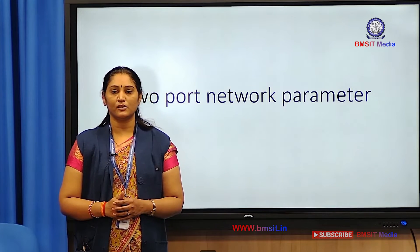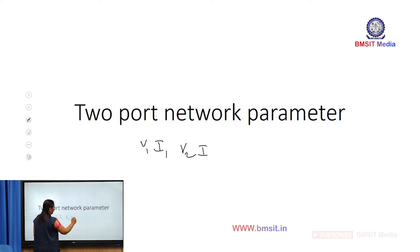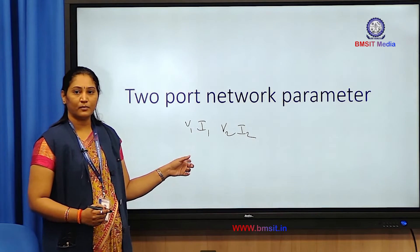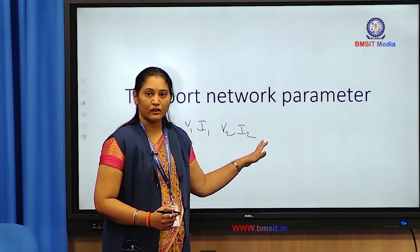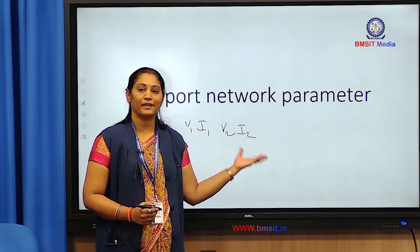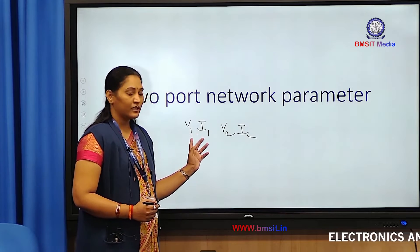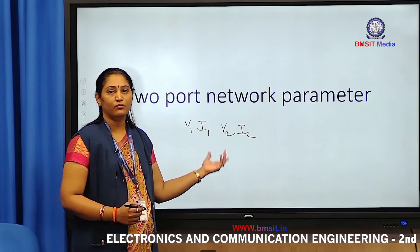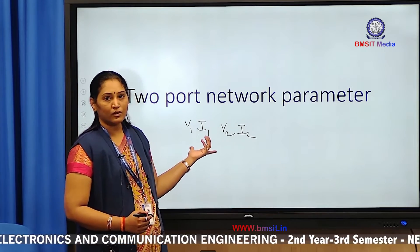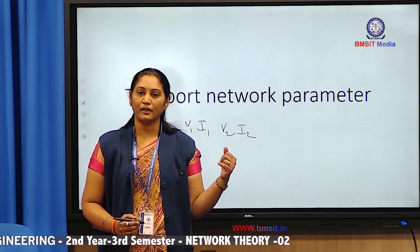We consider four terminals with four variables: V1, I1, V2, and I2. Out of these four variables, we take two variables at a time to model the network and visualize its behavior. We can consider V1 and I1 as independent while V2 and I2 are dependent, or vice versa. Two variables become dependent and two become independent.